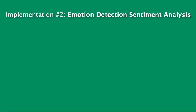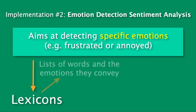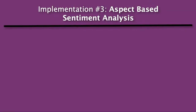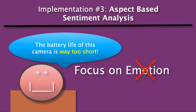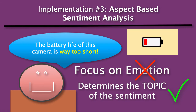Next, we have emotion detection sentiment analysis, which aims at detecting specific emotions, like frustrated and annoyed. Many of these emotion detection systems use lexicons, which are lists of words and the emotions they convey, to gauge emotional expression. The third and final way sentiment analysis is implemented is through aspect-based sentiment analysis. For example, if a user says 'the battery life of this camera is way too short,' instead of narrowly focusing on emotional response, this type of sentiment analysis determines that the sentence expresses a negative opinion about the battery life in particular.